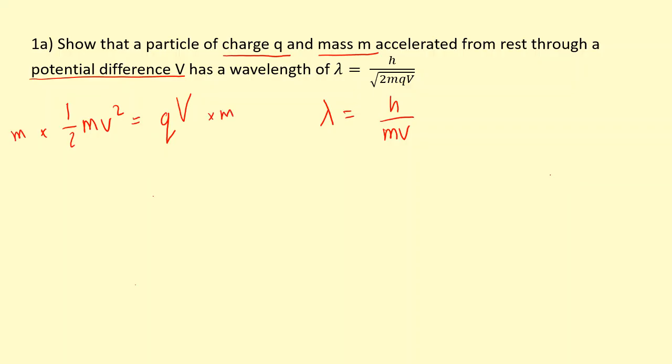This gives us half m squared v squared equals mqV. Then you move the two over: 2mqV equals m squared v squared. And now if you square root here, you get the momentum mv equals root 2mqV.